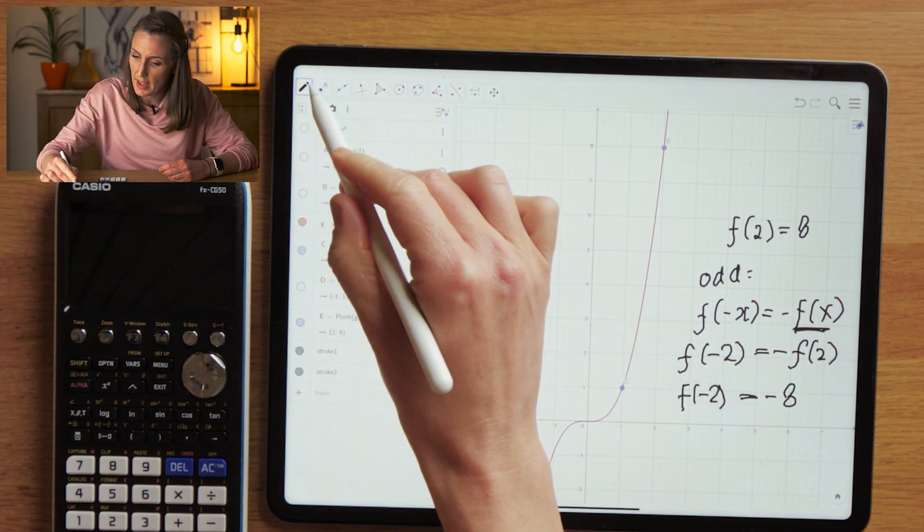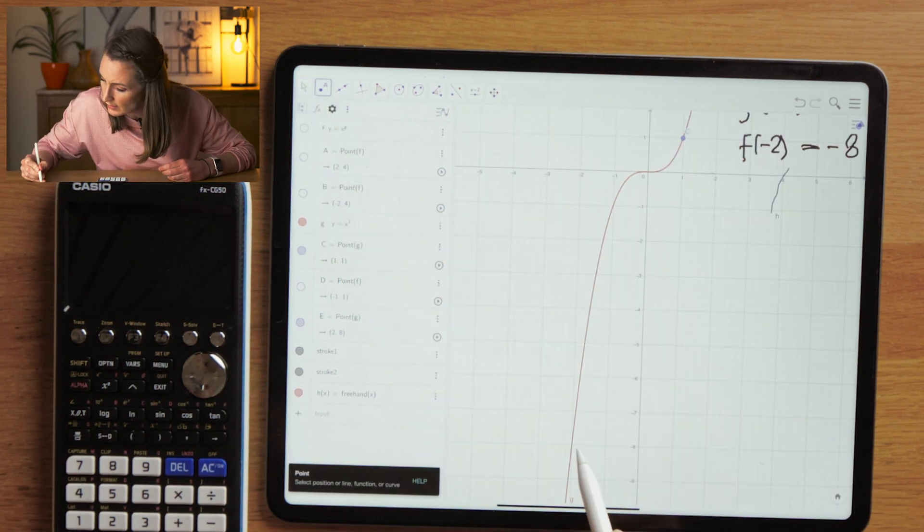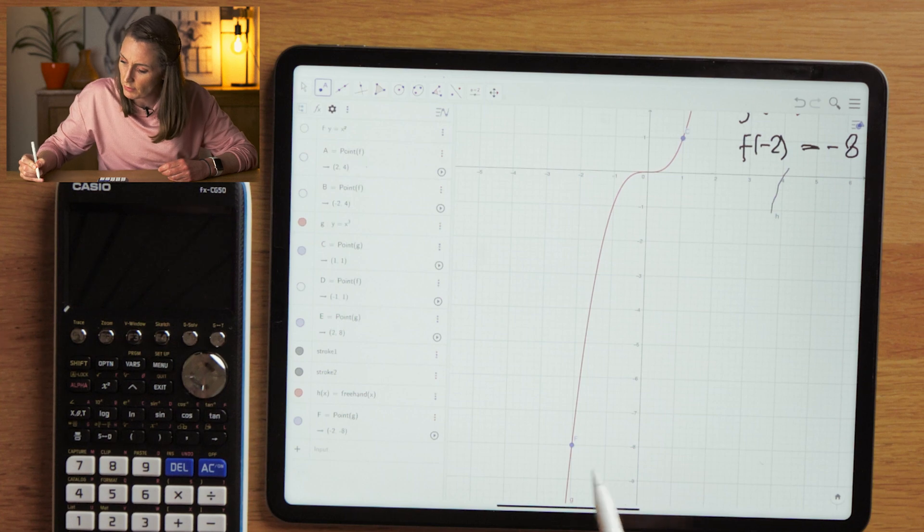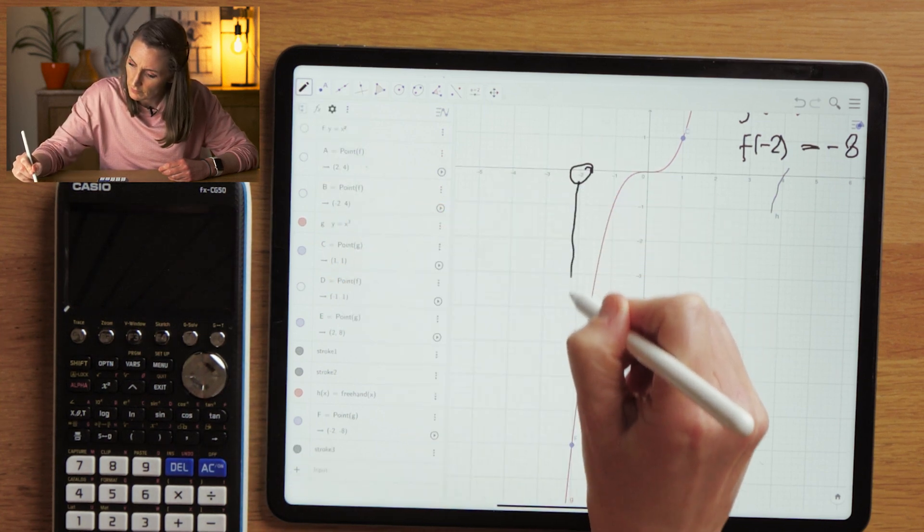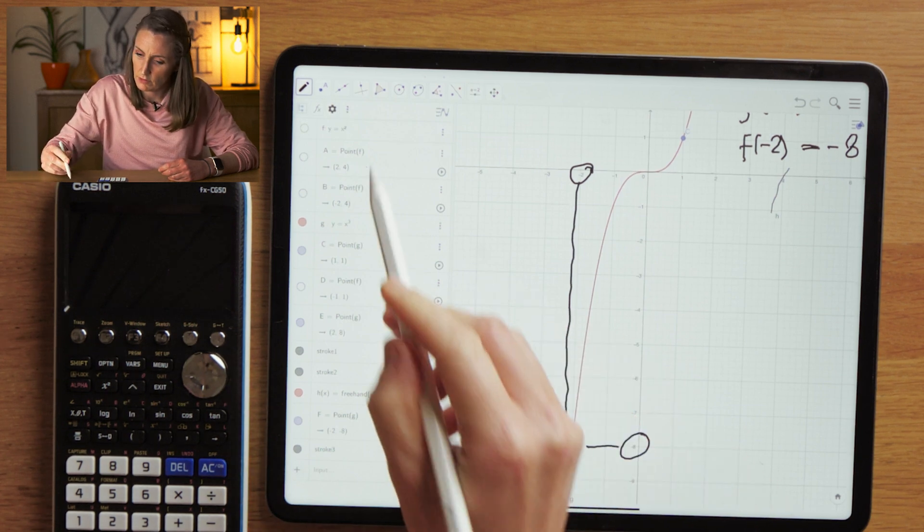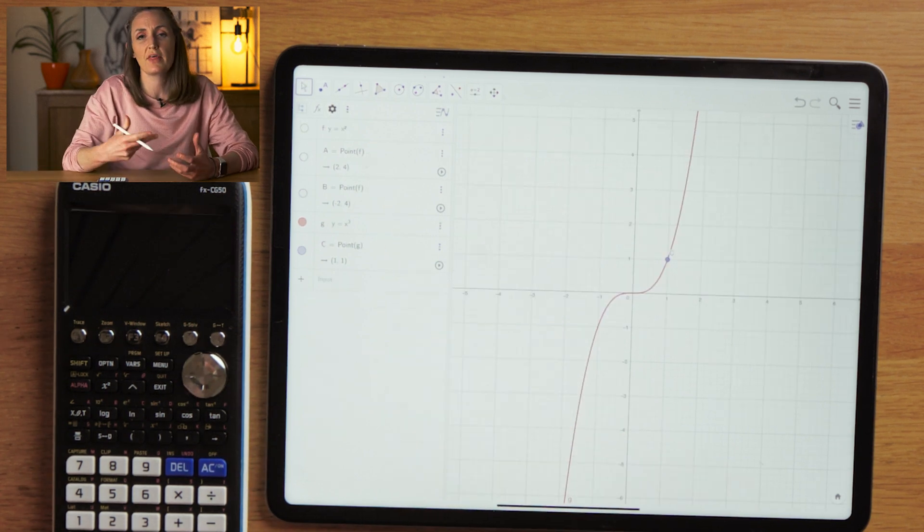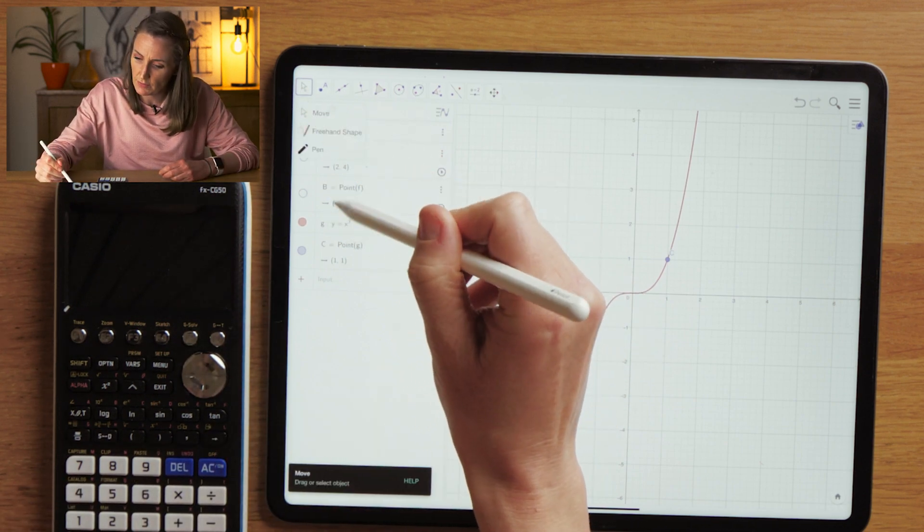And let's go and have a look at our graph and see if that's true. It is true. You can see here, this is the point here. This is minus 2, and this is minus 8.